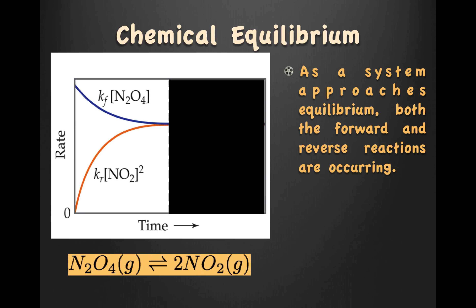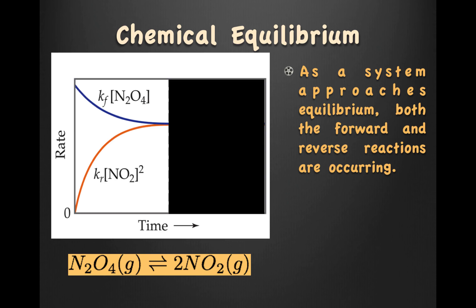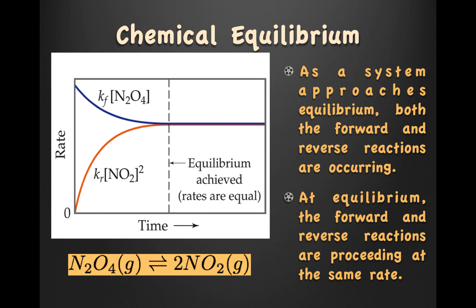As a system approaches equilibrium, both the forward and the reverse reactions are occurring. Notice we have N2O4, our reactant — notice it's the blue line — its rate is starting to decrease. NO2 is going in the reverse direction to form N2O4. Do you notice that orange line? Its rate is starting to increase. There comes a point where you reach equilibrium, when the rates are equal.